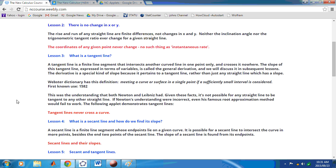The derivative is a special kind of slope because it pertains to a tangent line. As we saw in lesson 2, where we discussed no change in x and y, really, the derivative does not apply to a line that is not a tangent line.